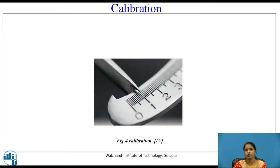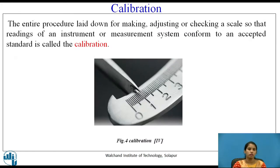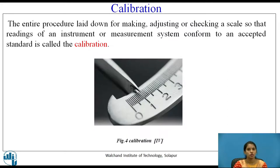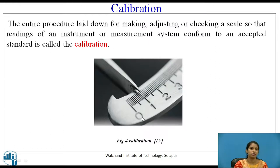Calibration is comparing measurements with standards. The entire procedure laid down for making, adjusting, or checking a scale so that the readings of an instrument or measurement system conform to an accepted standard is called calibration. Figure 4 shows calibration. Instruments need to be calibrated at equal intervals of time so that the readings they provide are accurate.